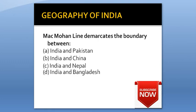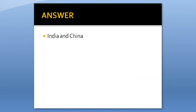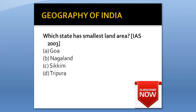McMahon Line demarcates the boundary between: Option A: India and Pakistan. Option B: India and China. Option C: India and Nepal. Option D: India and Bangladesh. Answer: India and China.